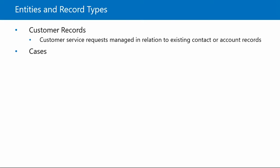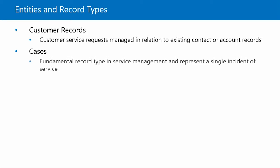Next, we have cases. Cases are the fundamental record type in service management and represent a single incident of service. Different organizations may refer to cases using different terms, including incident, ticket, service requests, and so forth. In other words, cases are anything in the context of a customer interaction that requires some type of resolution or answer. A customer can have many cases associated with his or her record at any time. Within Microsoft Dynamics 365, users have the ability to see open and resolved cases from the customer record. Cases can also have activities associated with them so everyone in the organization can see what is happening with a particular case.